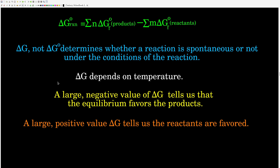One way to calculate delta G zero of a reaction is basically Hess's law but for Gibbs free energy: products minus reactants, each multiplied by their coefficient in the balanced equation. So delta G zero reaction equals the sum over products of n times delta G of formation, minus the sum over reactants of n times delta G of formation. These delta G of formation values are things we can look up in tables. The N stands for the coefficients in the balanced equation.